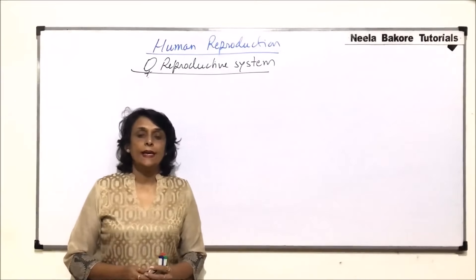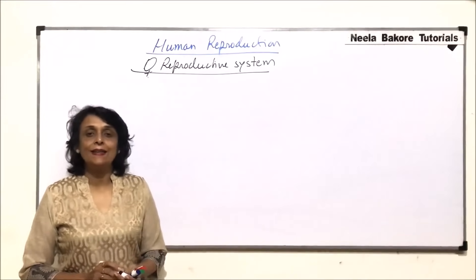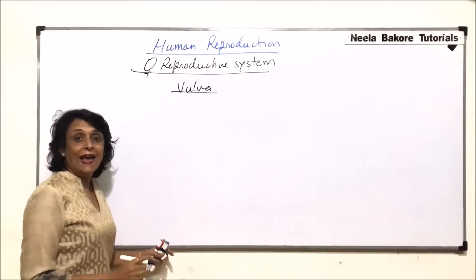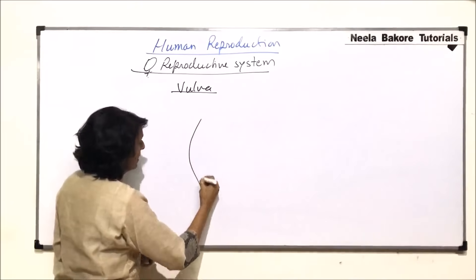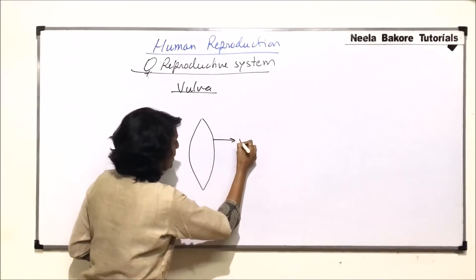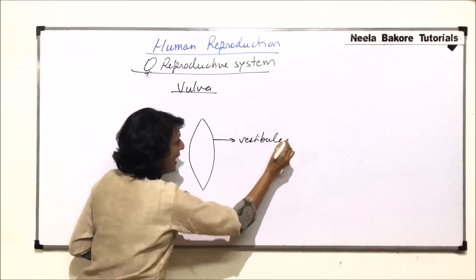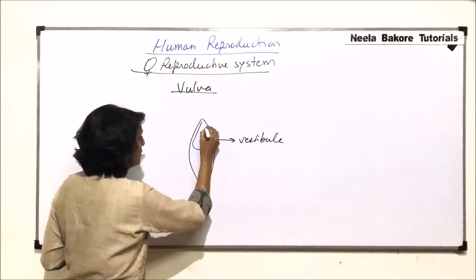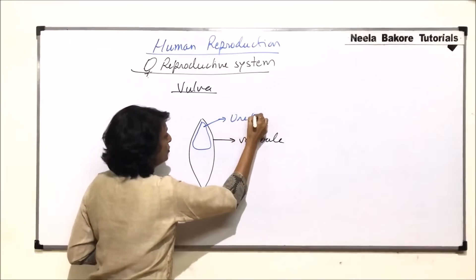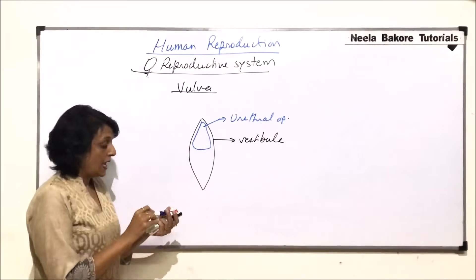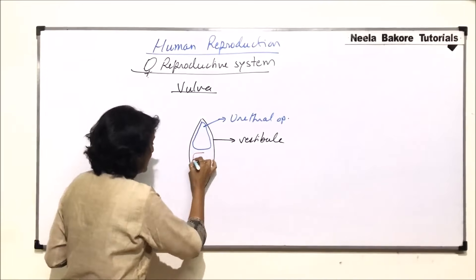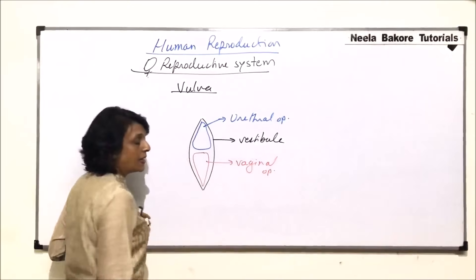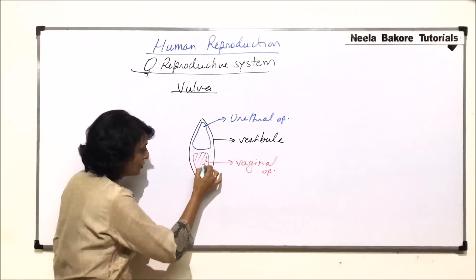In this part we'll talk about the external genitalia in females and the glands associated with the female reproductive system. The external genitalia is known as the vulva, and there is a depression known as the vestibule. In this vestibule there are two openings: the upper opening is the urethral opening or urethral orifice, and the lower opening is the vaginal opening or vaginal orifice.